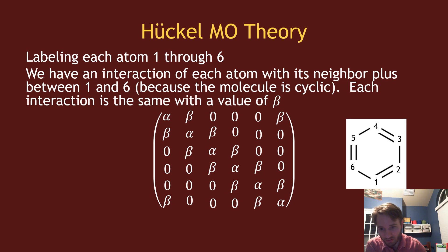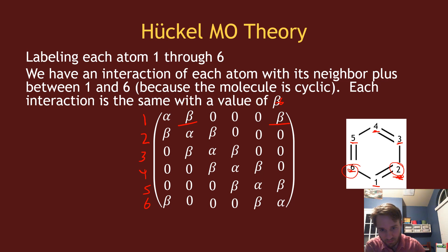Then I number the atoms: atom one, two, three, four, five, six going around the benzene ring. Atom one is bonded with atom two and with atom six, so there's going to be a beta value at the one-two and one-six positions in the matrix. This is a six-by-six matrix representing atoms one through six. The one-one diagonal is just alpha; the one-two and two-one, and the one-six and six-one positions must be beta.